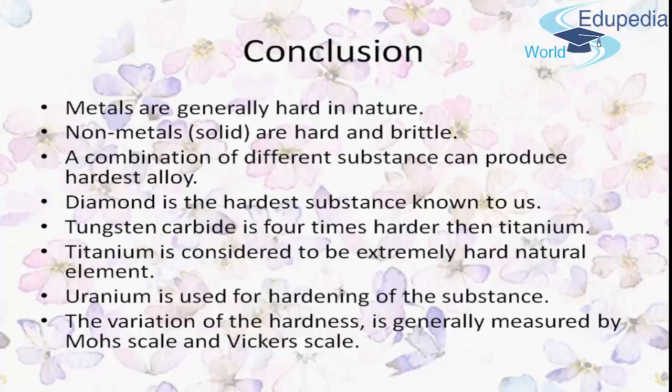Diamond is the hardest known substance, as we have discussed regarding its structure and why it is so hard. Tungsten carbide is actually four times harder than titanium. It is a compound made of approximately 85% tungsten carbide, 9.5% nickel, 1.8% tantalum, 2% titanium, 1% niobium, and 0.3% chromium. Tungsten carbide measures between 8 to 9 on the Mohs scale, and in ring form is said to be the most scratch-resistant material in the world.